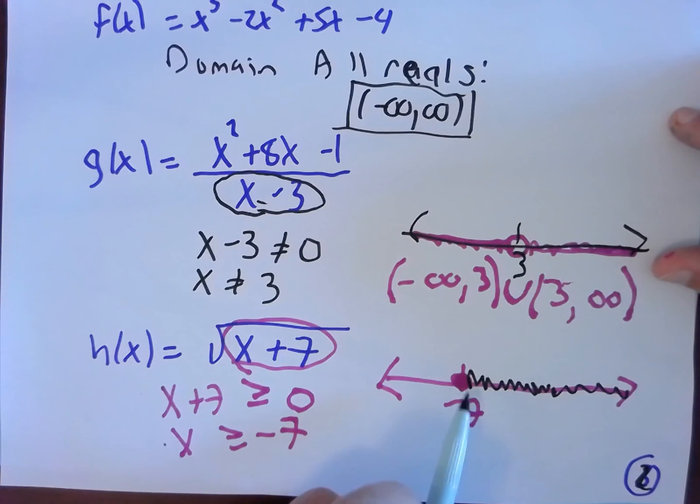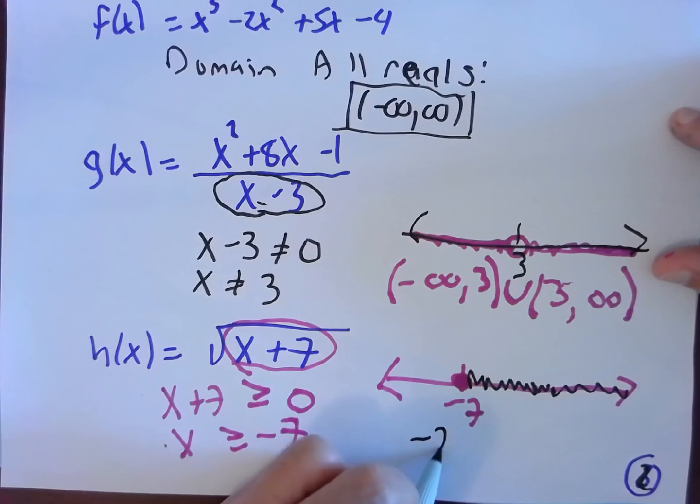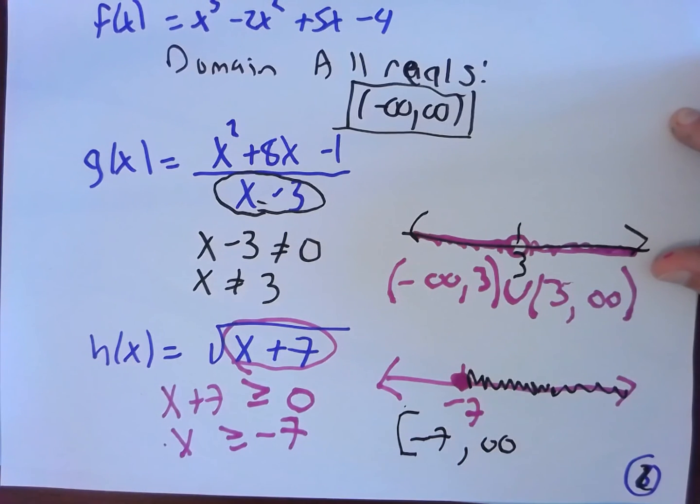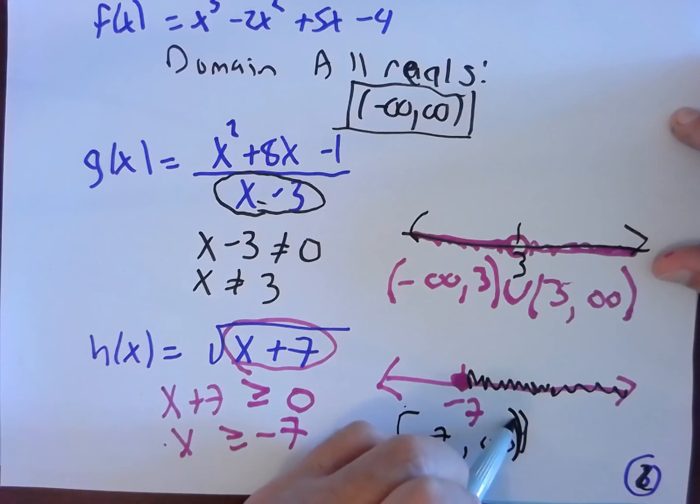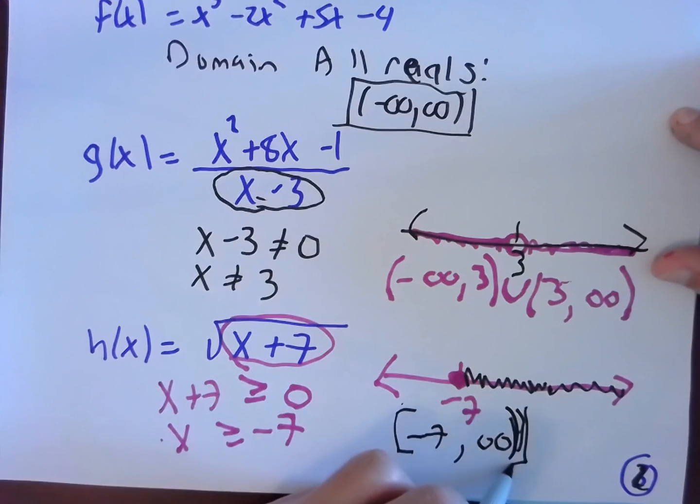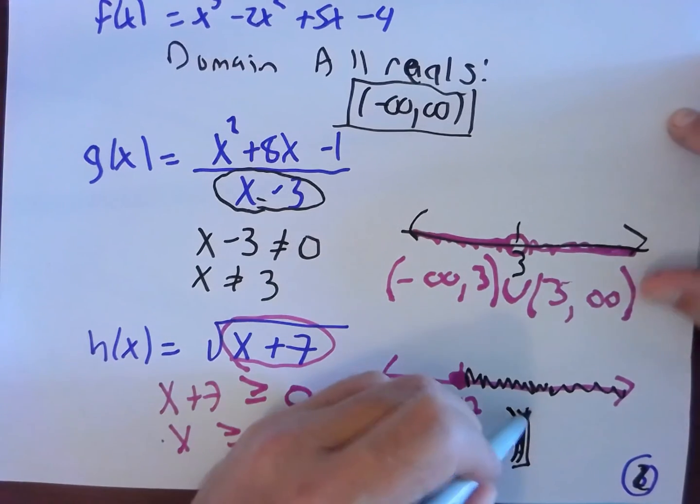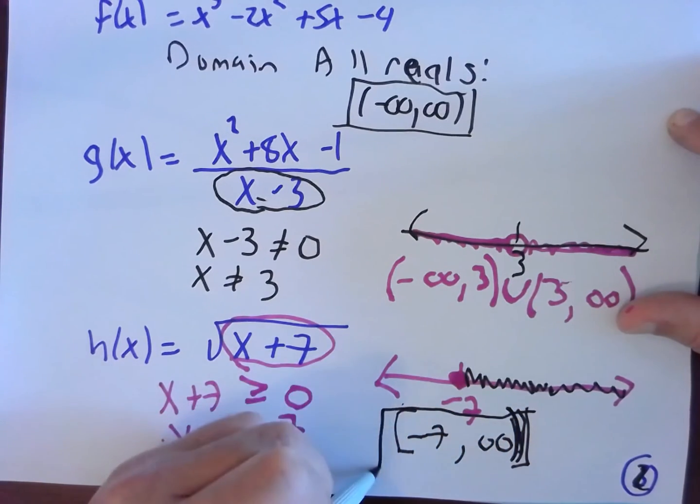So intervals are always smaller, comma, larger. The smallest thing I shaded is negative seven all the way up to I went on forever. This goes to infinity. Did I actually touch negative seven? Yes, I have a solid dot there. So square bracket. Did I touch infinity? No. You never touch infinity. Infinity always gets a parenthesis. That's a parenthesis there. So here's the domain.